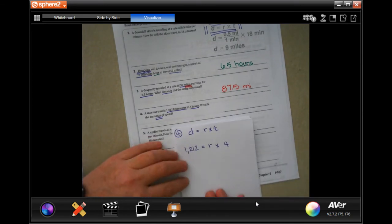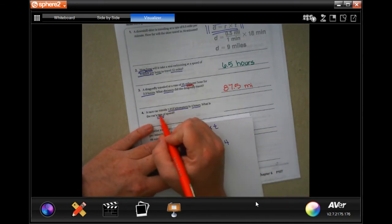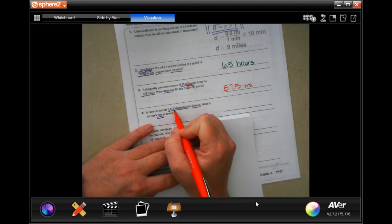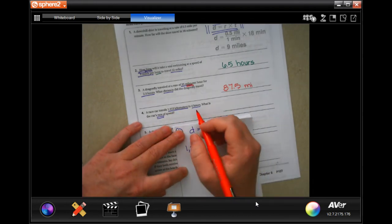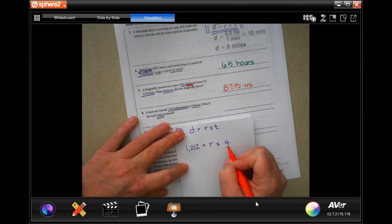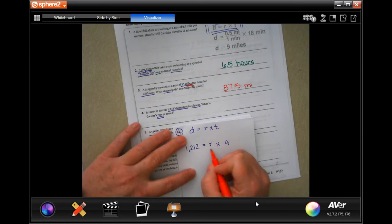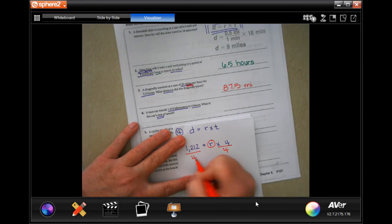All right, I'm going to do number 4. A car travels 1,212 kilometers. That's our distance, guys. In 4 hours, it tells us how much time. It wants to know the rate of speed. So, if I want to get this alone, I need to do the opposite of this, which is to divide by 4. Divide by 4.